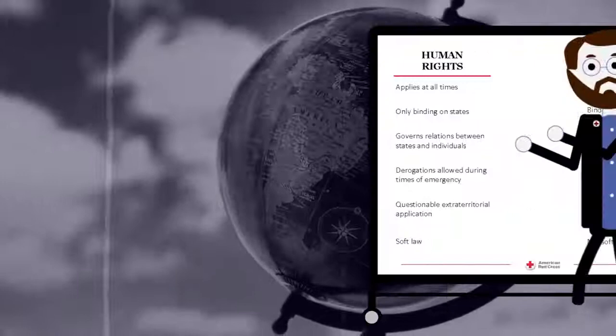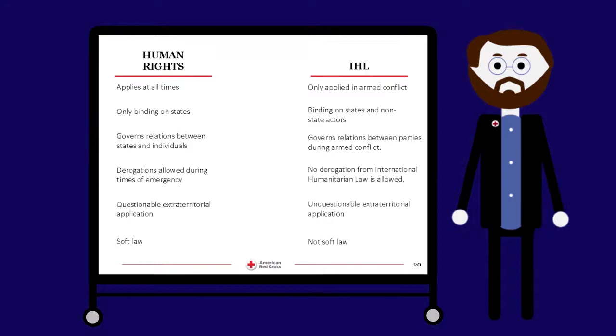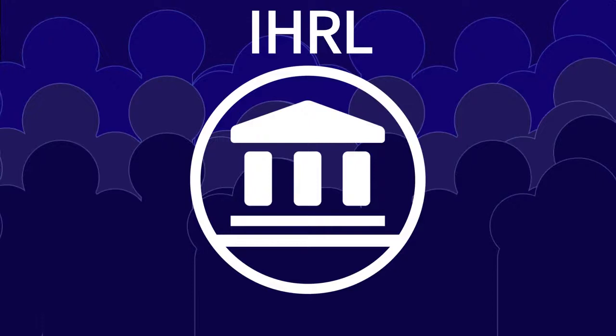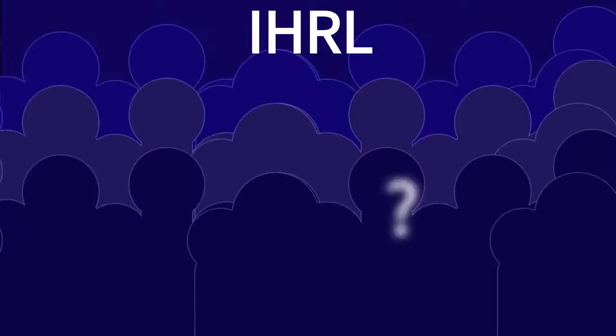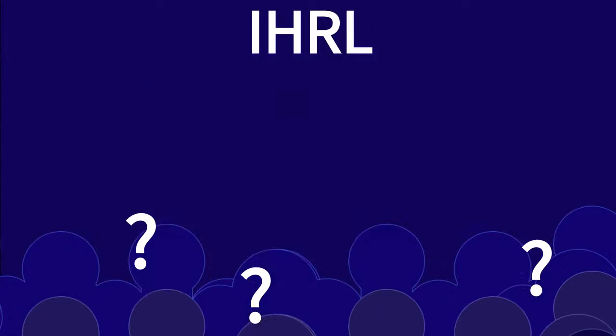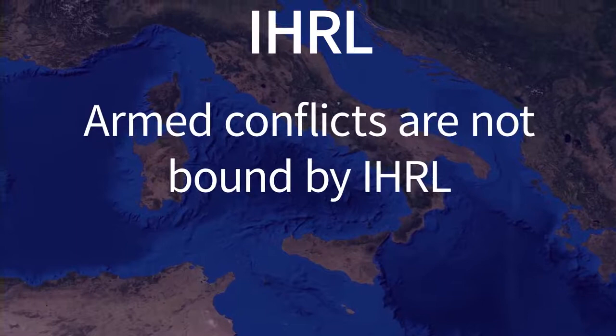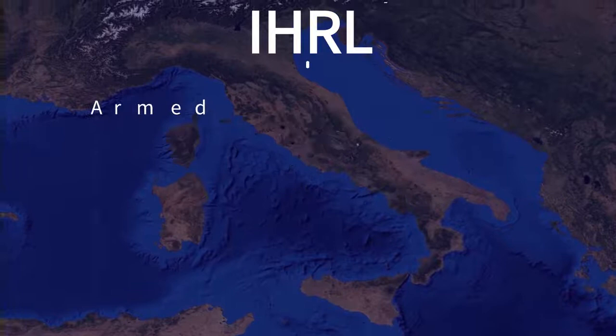IHRL governs how a nation treats people under its control. This may be citizens or non-citizens that are under the control of the government of a nation. The rights of citizens are often well-defined, while the rights of people who are not citizens but still under the control of the government are usually less well-defined. IHRL is only binding on nations. Other groups, such as armed groups in an armed conflict, are not bound by IHRL. However, there is a growing belief that if these groups assume control over people in the same way that a government does, then they too should be held responsible for following IHRL.